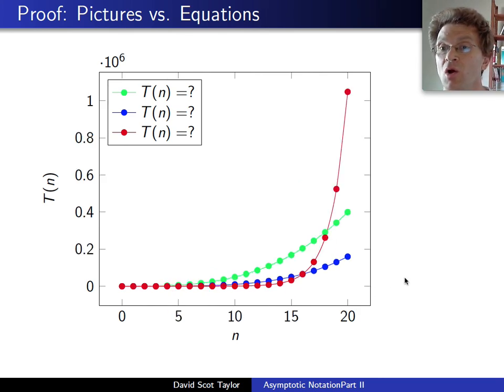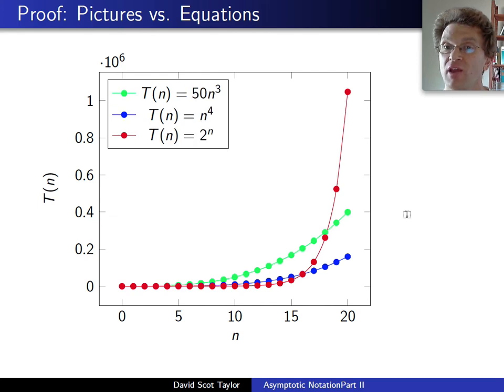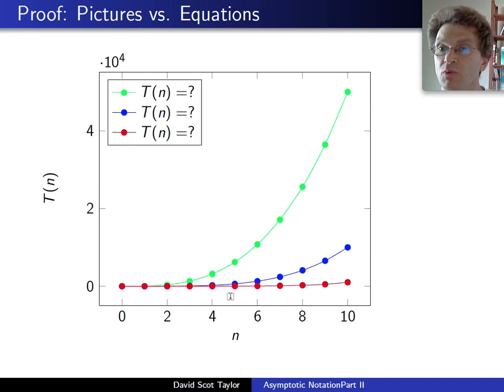But of course, even n equals 10 is a really small value. What happens if I go a little higher? Well, if I go up to n equals 20, we start to see the red function really take off here. It turns out that going up to 10 just wasn't far enough. If you want to analyze things graphically, there's this question: how far do you have to go? What does n naught have to be before the graph is going to show you what you need to see? In this case, the red function is exponential, it's 2 to the n, and it grows much faster than both the 50 n cubed green function and the n to the fourth blue function.